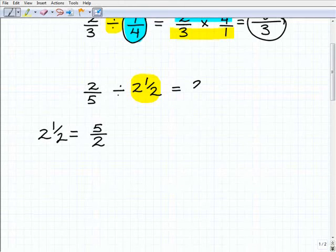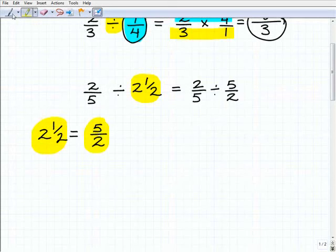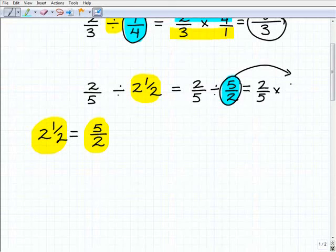So really, this problem here is two fifths divided by five halves. Okay, so I'm going to write that two and one half this way. Okay, remember, they're equal to one another. Then we're going to follow the same steps. I'm going to turn this division problem into a multiplication problem by flipping this fraction around. So I'm going to get two fifths times five over two. When I flip it around, it's called finding the reciprocal.